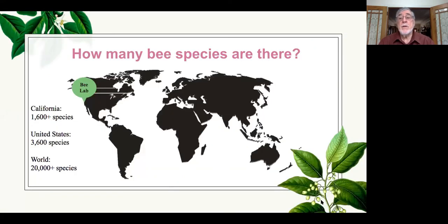How many bee species are there in the world? In California, as I mentioned, we have about 1,600 — probably more. In the United States we have 3,600 species. Worldwide we have 20,000 recorded species, but we think the number may be as high as 30,000. We don't think all the species have been identified yet from places like parts of Africa, Asia, and Latin America, so we still have a lot of work to do.